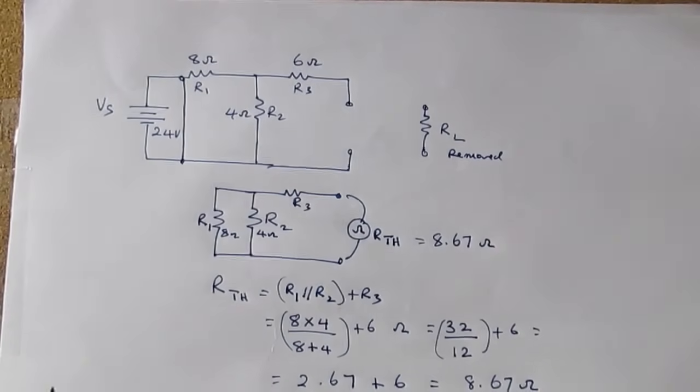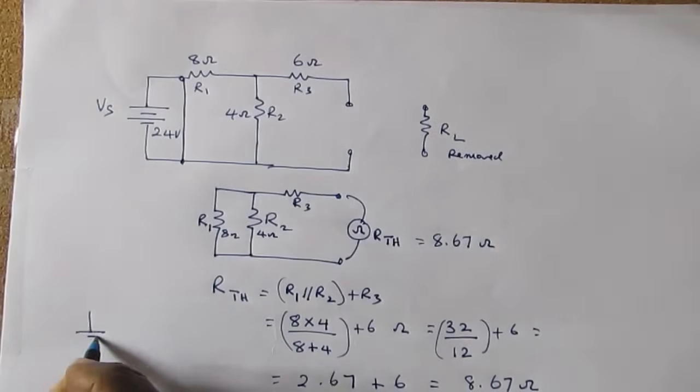Now the final step in producing the Thevenin equivalent circuit is actually drawing the circuit with the values for the Thevenin voltage and the Thevenin resistance noted on the circuit. So we draw the Thevenin equivalent circuit like this. And we say now this is V Thevenin, and in this case the V Thevenin, remember previously we got the V Thevenin to be 8 volts.